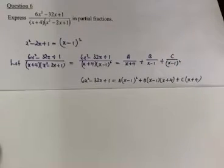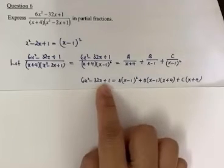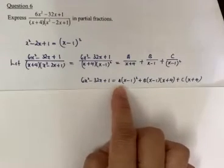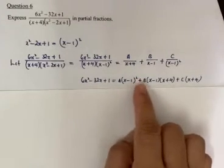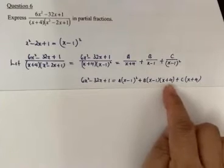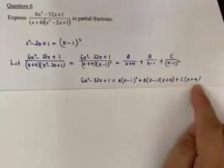Let's simplify this. So you get 6x squared minus 32x plus 1 equals to A times x minus 1 holding square plus B times x minus 1 times x plus 4 plus C times x plus 4.